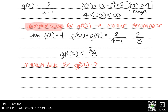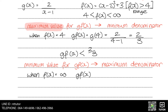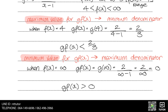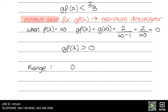To get the minimum value of gf, we want the denominator at its maximum, which happens when f equals infinity. Substituting infinity into g gives 2 over infinity, which equals 0. Therefore the minimum value of gf is 0, and gf is greater than 0. Combining gf less than 2 over 3 and gf greater than 0, we get the range of gf: 0 is less than gf is less than 2 over 3.